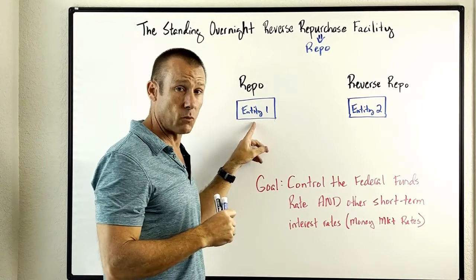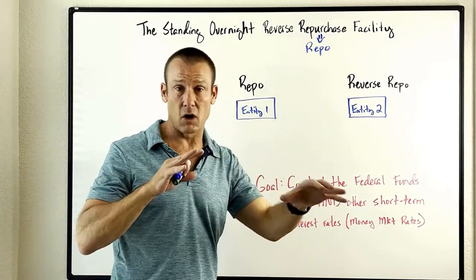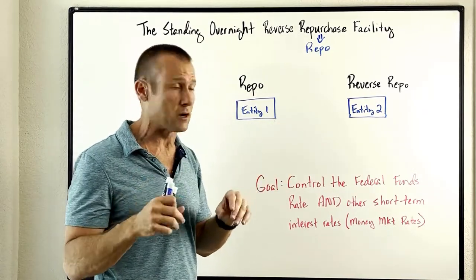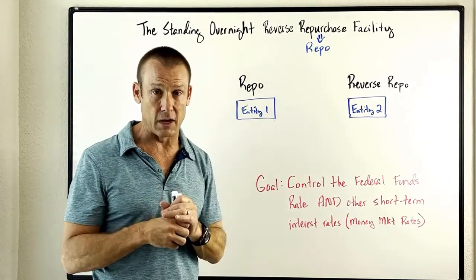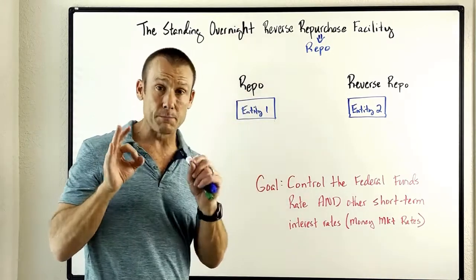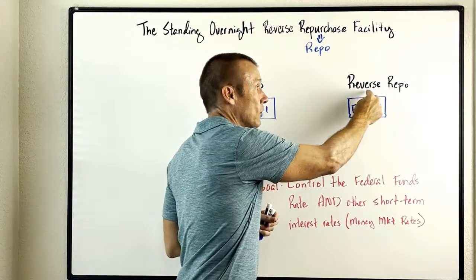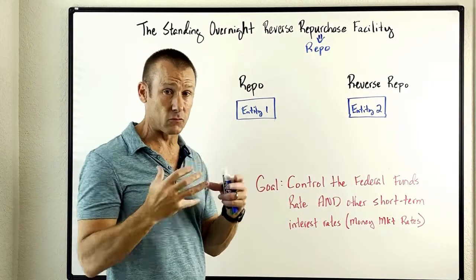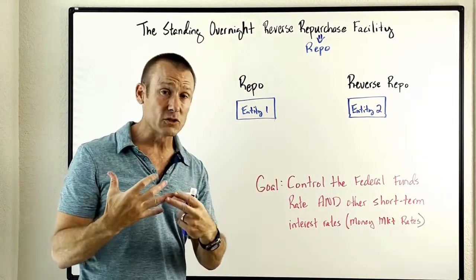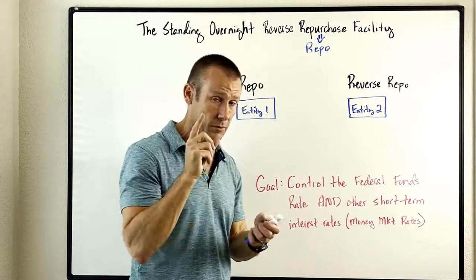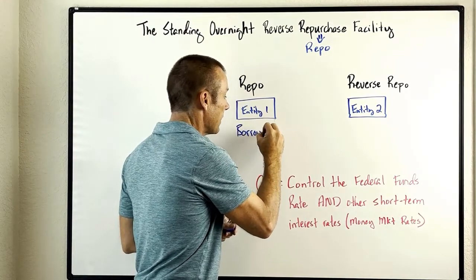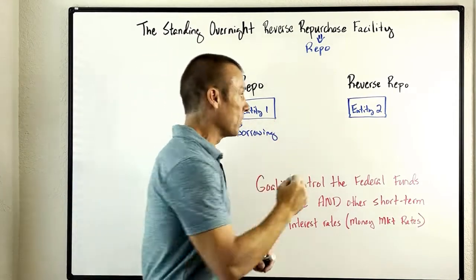I've got entity one and entity two — could be bank, non-bank financial institution, whatever. One wants to borrow from the other. The one that wants to borrow is doing the repo; the one that's doing the lending is the reverse repo. So every repo has a reverse repo happening at the same time. To keep it straight: repo equals borrowing, reverse repo equals lending.